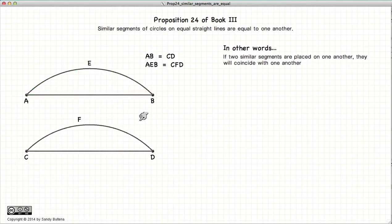Now this proposition states that if we have two similar segments of circles where the base AB is equal to the base CD, then if they are placed on top of each other, they are going to be equal, or they are going to lie or coincide with each other.